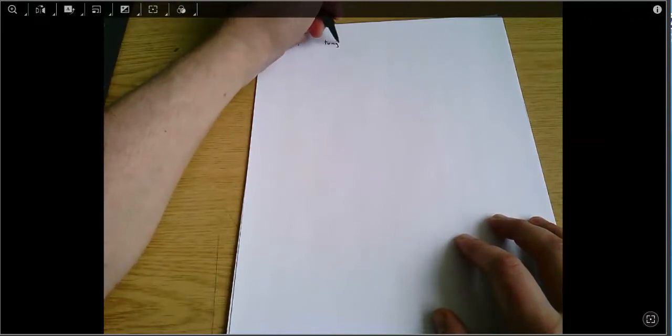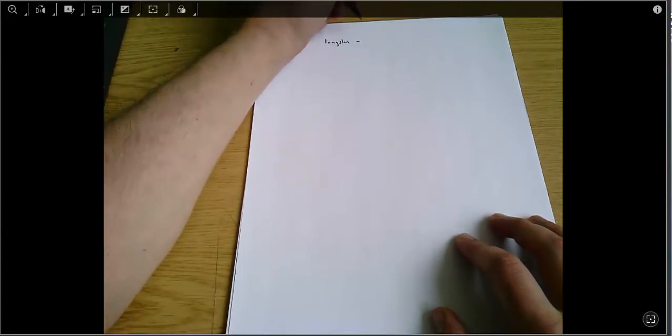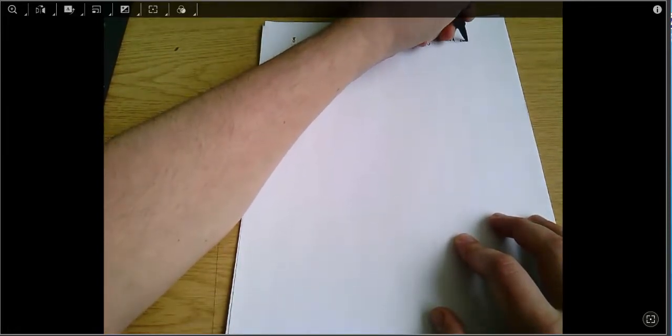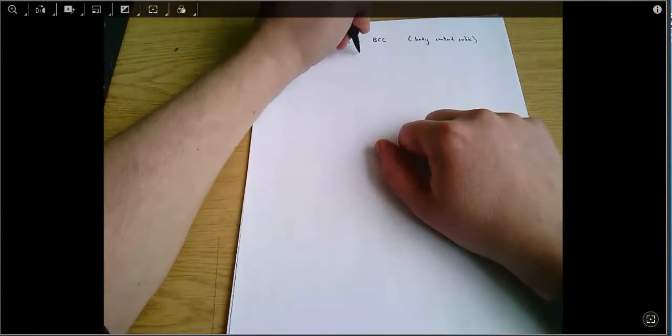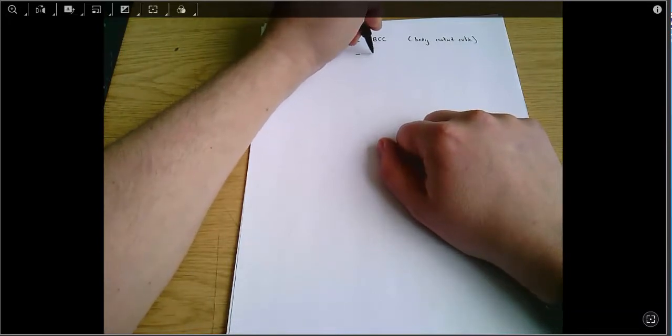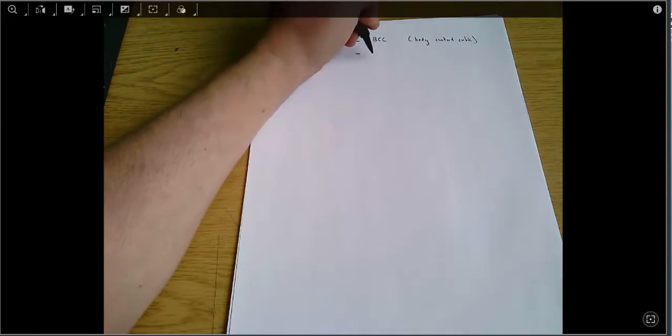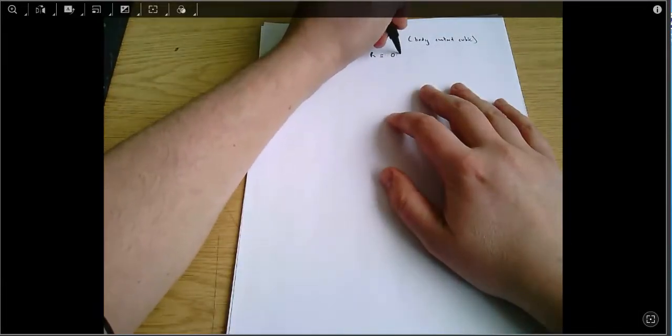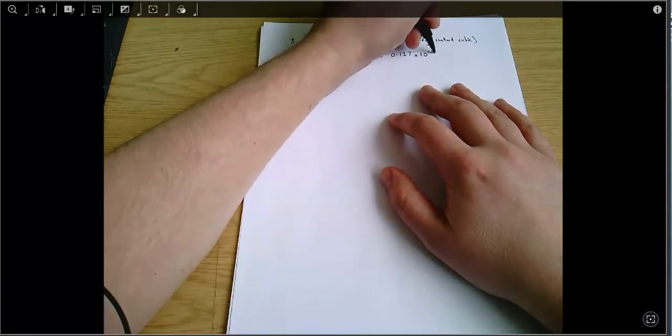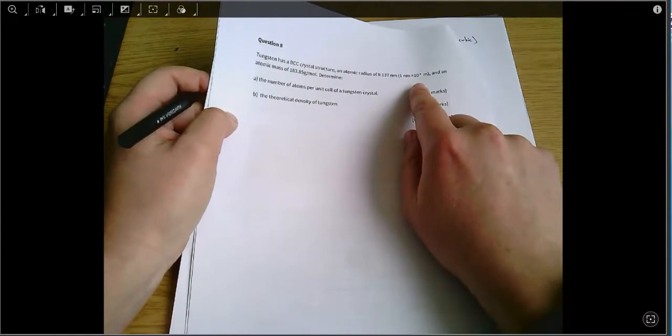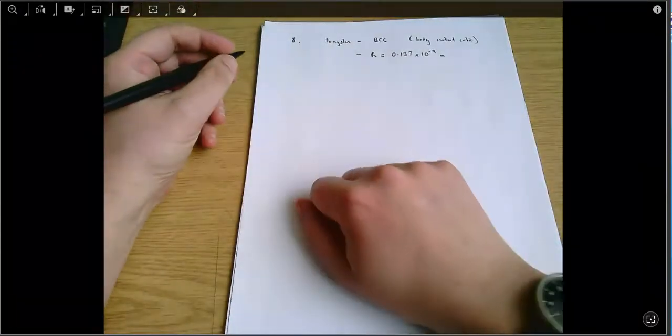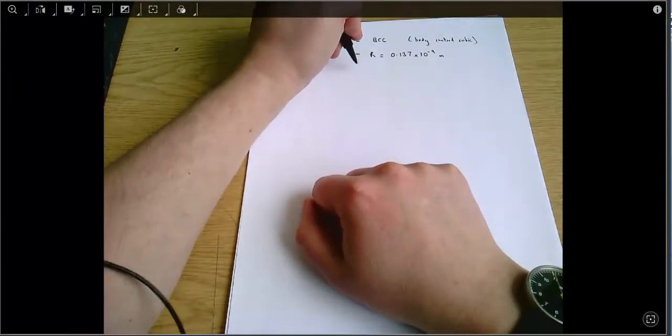I'm going to start just by writing out the information from the question about tungsten. That it is BCC, that's Body Centered Cubic. We'll talk about what that means. It's got an atomic radius. I'm going to just check my datasheet to match how I label that. I'll make that capital R equals 0.137 nanometres, which equals 0.137 times 10 to the minus 9 metres. And just to show you that conversion from nanometres to metres is in the question there. It's worth remembering anyway that nanometres are 10 to the minus 9 metres. Nano indicates 10 to the minus 9.